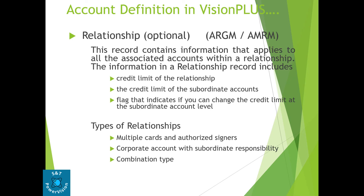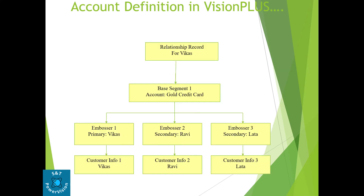The relationship option — the online screen is ARGM and the file name is AMRM. This record contains information that applies to all the associated accounts within the relationship. As I said, a customer can have more than one account. All the customer accounts are linked to the relationship number. Information in a relationship record includes: credit limit of the relationship, credit limit of the subordinate account, flag to indicate if the credit limit can be changed at subordinate level, type of relationship, multiple cards and authorized signers, corporate account with subordinate responsibility, and combination type. In some businesses, block code and relationship credit limit are also set up at the ARGM screen.